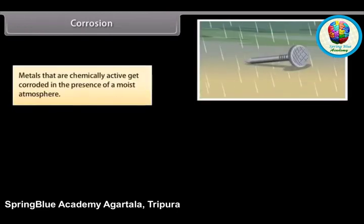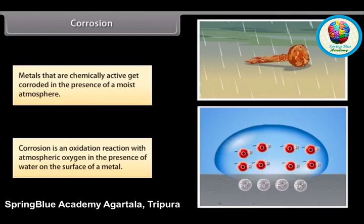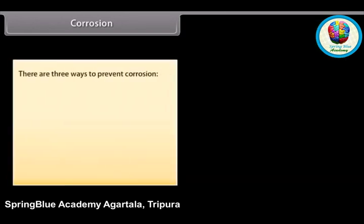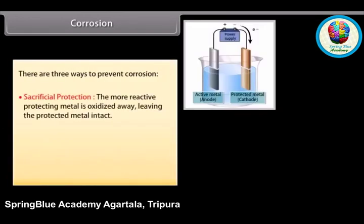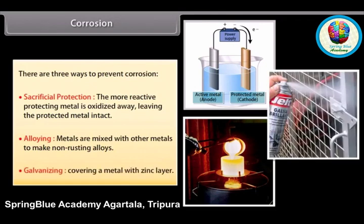Corrosion. Metals that are chemically active get corroded in the presence of a moist atmosphere. Corrosion is an oxidation reaction with atmospheric oxygen in the presence of water on the surface of a metal. For example, iron and aluminium corrode; however, non-reactive metals like gold, platinum, and mercury do not corrode. There are three ways to prevent corrosion: sacrificial protection, where the more reactive protecting metal is oxidized away leaving the protected metal intact; alloying, where metals are mixed with other metals to make non-rusting alloys; and galvanizing, where a metal is covered in a thin zinc layer produced by electrolytic deposition.